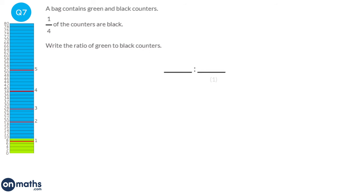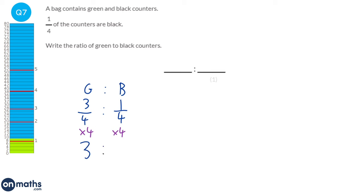We're going to write this as a ratio of green to black. A quarter of the counters are black, so the remaining three quarters are green. We multiply both sides of the ratio by 4: three quarters times 4 gives 3, and one quarter times 4 gives 1. So the ratio is 3 to 1 — not 4 to 1 as some might expect.